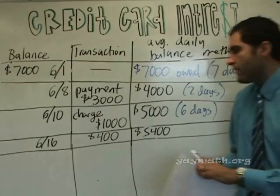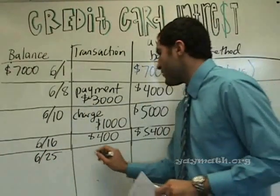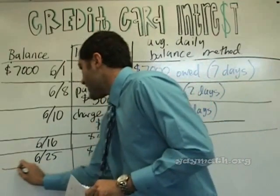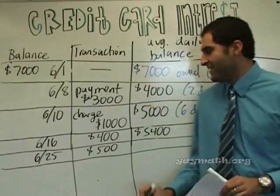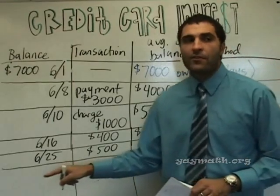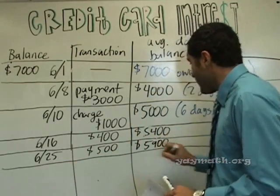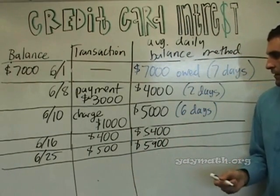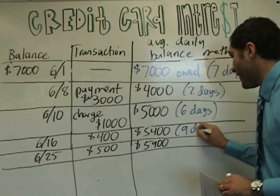The next transaction is on the 25th — a charge of $500 for business. After this transaction, how much do we owe the credit card company? $5,900. And how many days did we owe $5,400? Nine days.